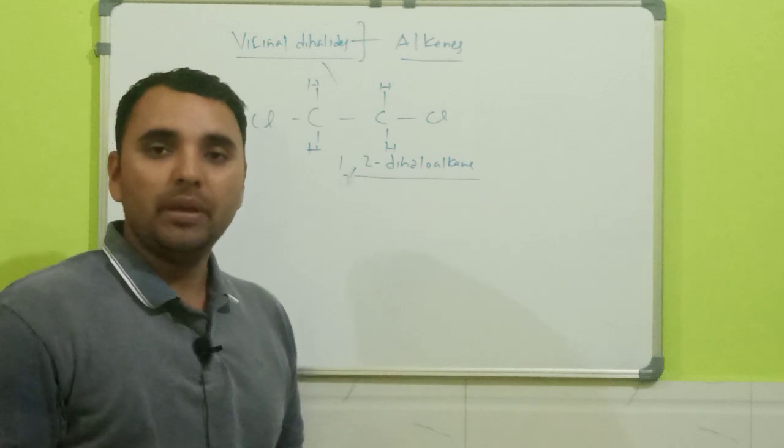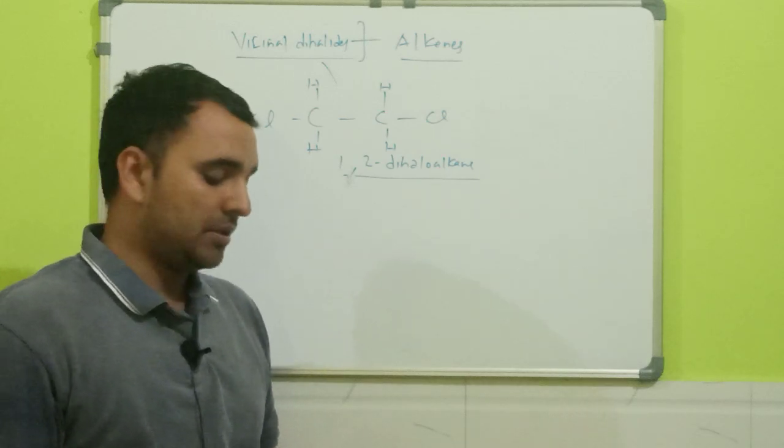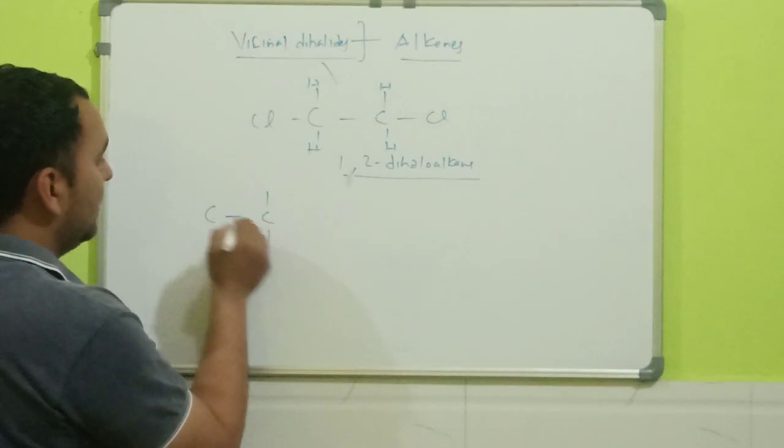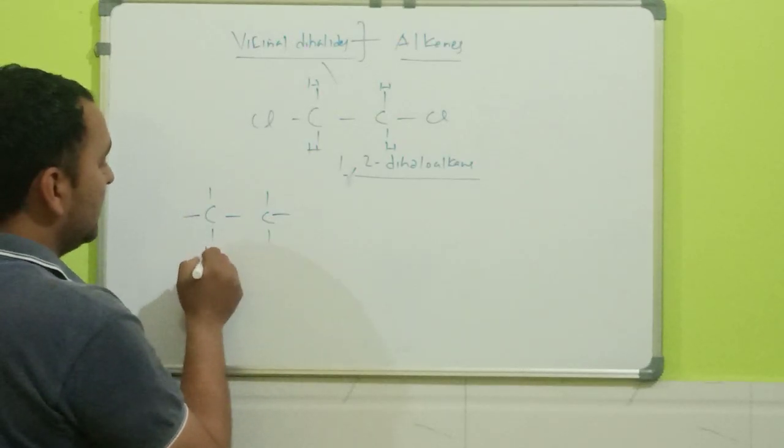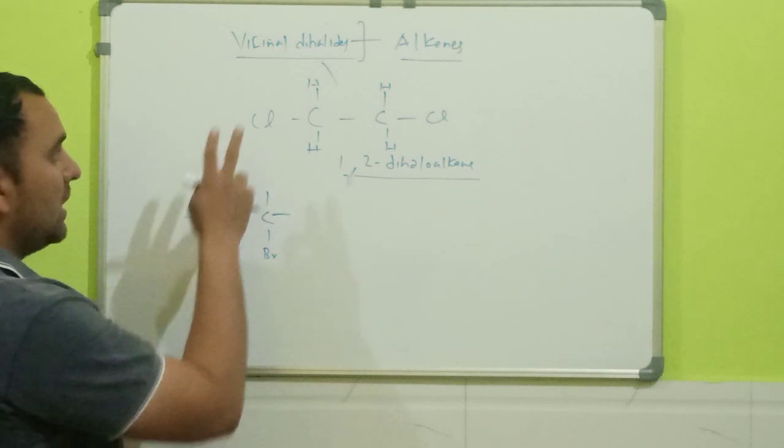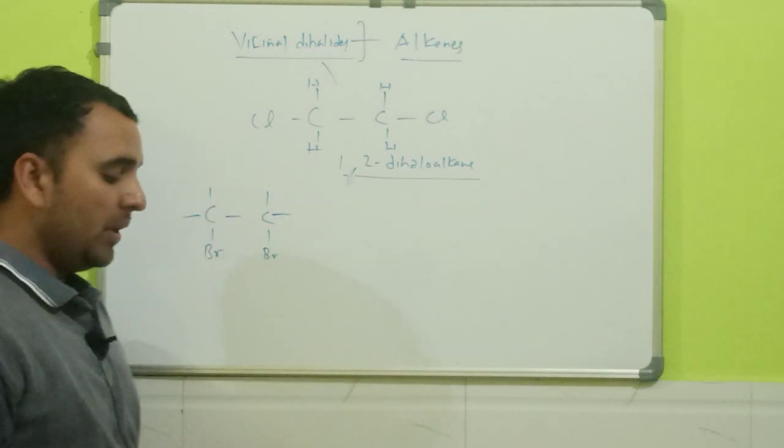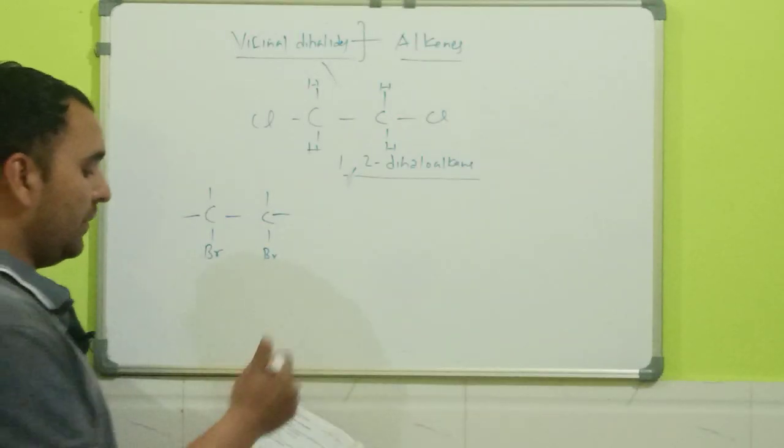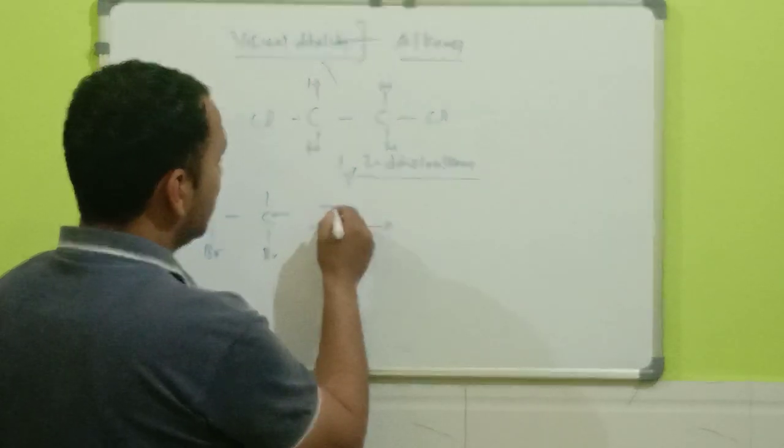Now let us understand how alkenes are prepared from vicinal dihalides, or you can say explain the dehalogenation reaction. So we have vicinal dihalide. Let us consider here two bromine atoms are attached to these two adjacent carbons. It is a vicinal dihalide.